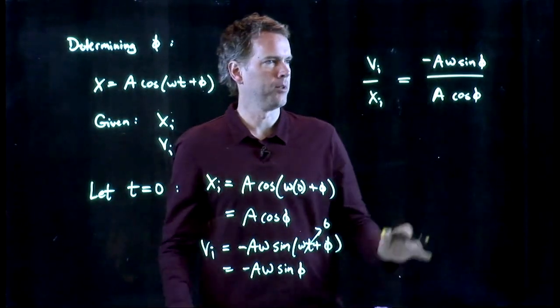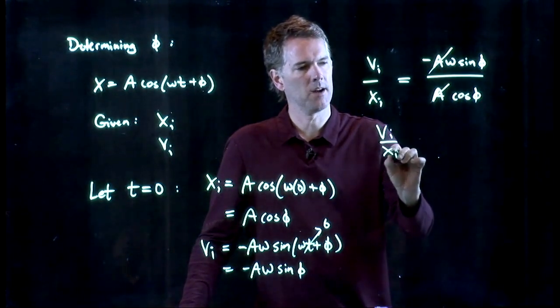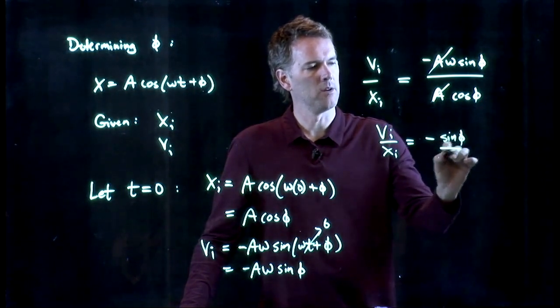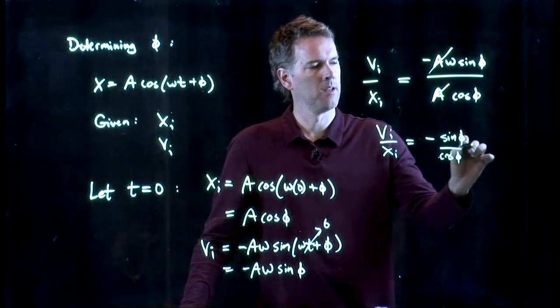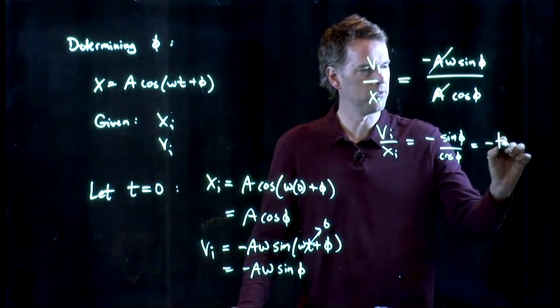Let's divide one equation by the other. And look what happens. The a drops out. And we get vi over xi equals negative sine phi over cosine phi.